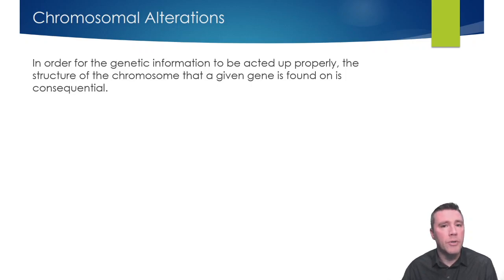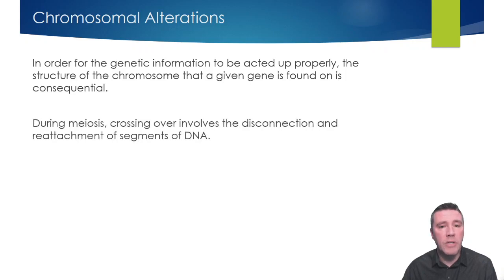Remember, during meiosis in prophase 1, crossing over occurs. Crossing over is the exchange of genetic information between non-sister chromatids of a homologous pair. The process of crossing over requires that a segment of a chromatid is physically disconnected from the rest of it before being reattached to the chromatid it is exchanging with.